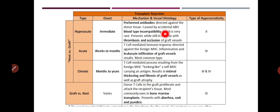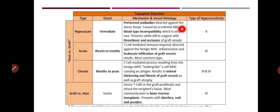Sometimes this rejection is so rapid that it happens while the surgery is still going on. What happens in this rejection is thrombosis — unusual blood clotting. Normally blood clotting occurs due to injury, but here it happens abnormally. The blood vessels of the graft start forming clots — since it is an organ being grafted, the blood vessels of that organ begin clotting. This is due to Type 2 hypersensitivity and it is very immediate.